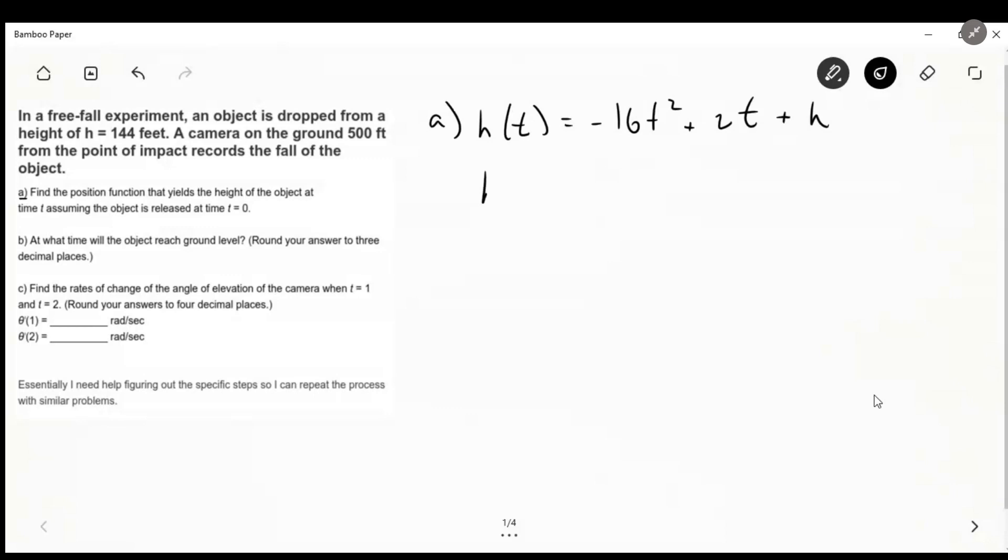In our case we can't do anything with t since that's just time, but with v, we know that we're not throwing it at all actually, it's just being dropped. So that means our initial velocity is zero, and our initial height is 144 feet, which it gives us. So we can just simplify this: 144 minus 16 t squared is our equation.